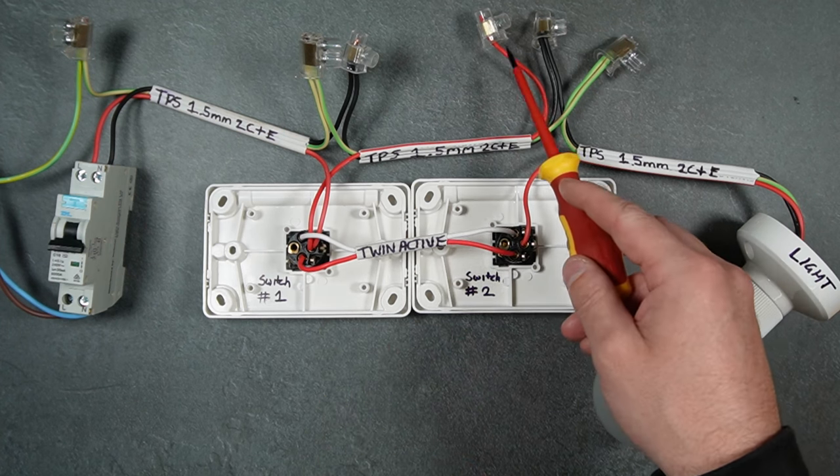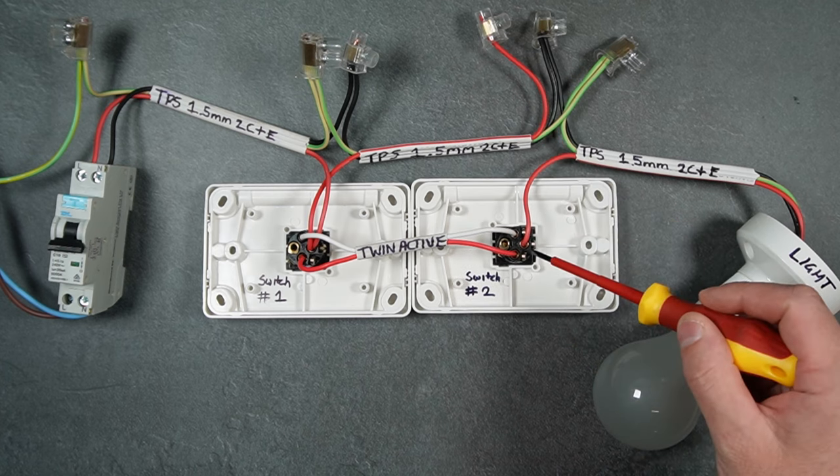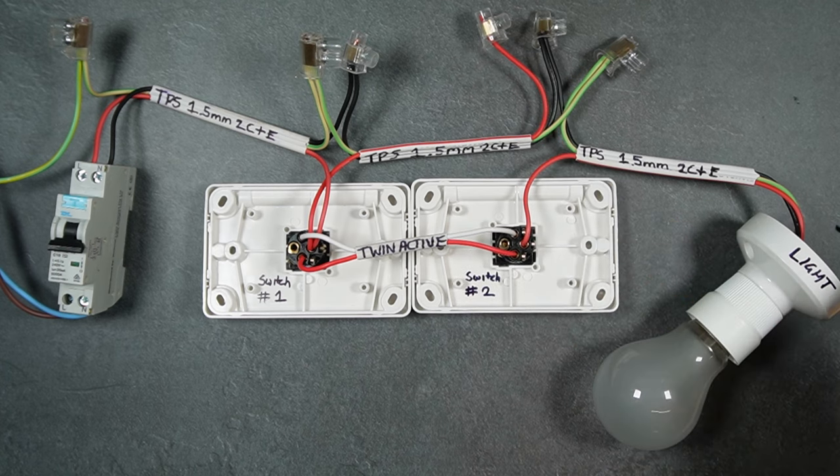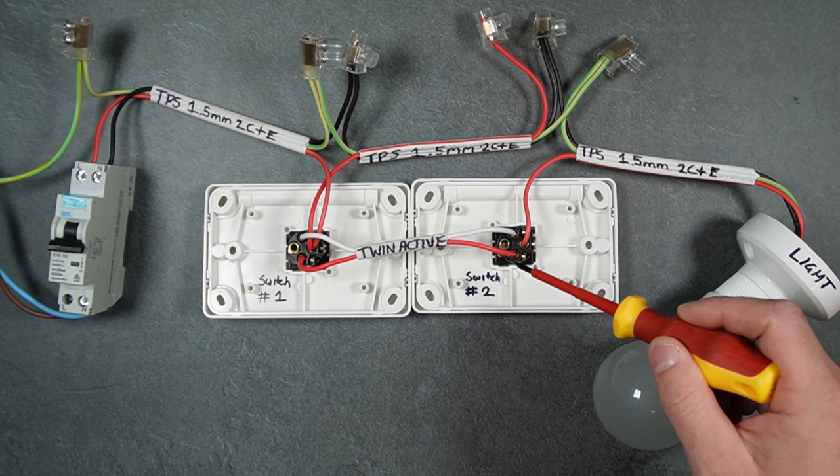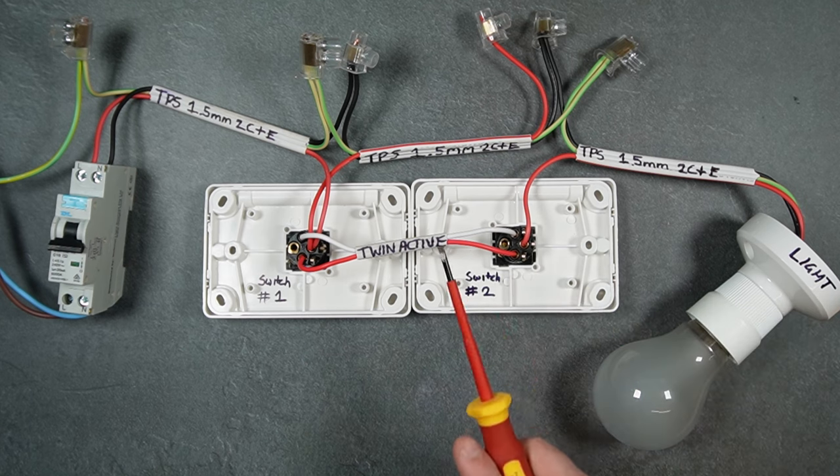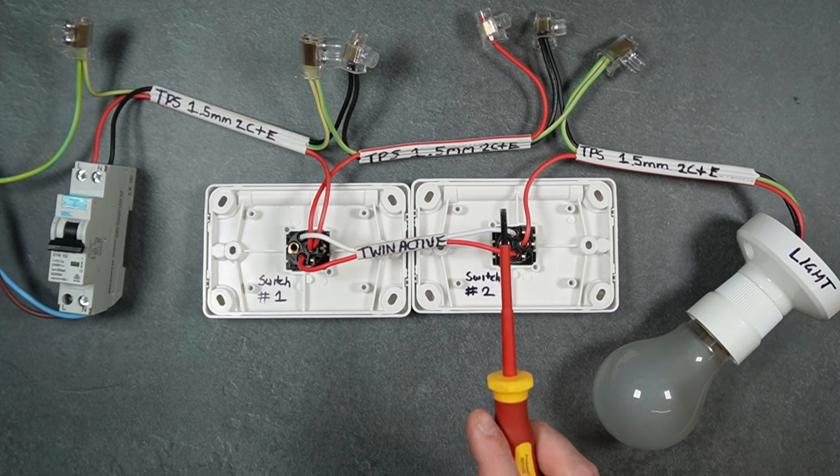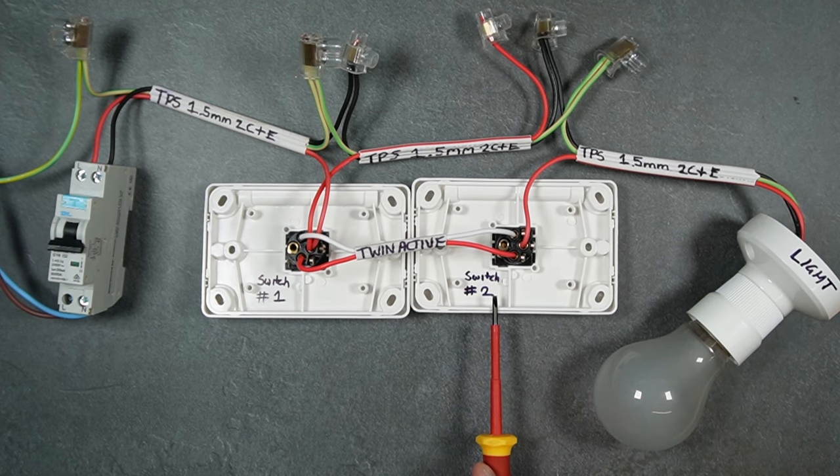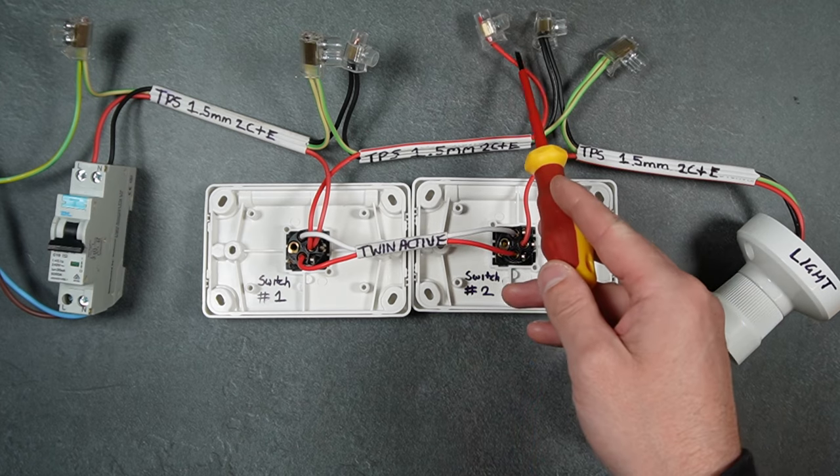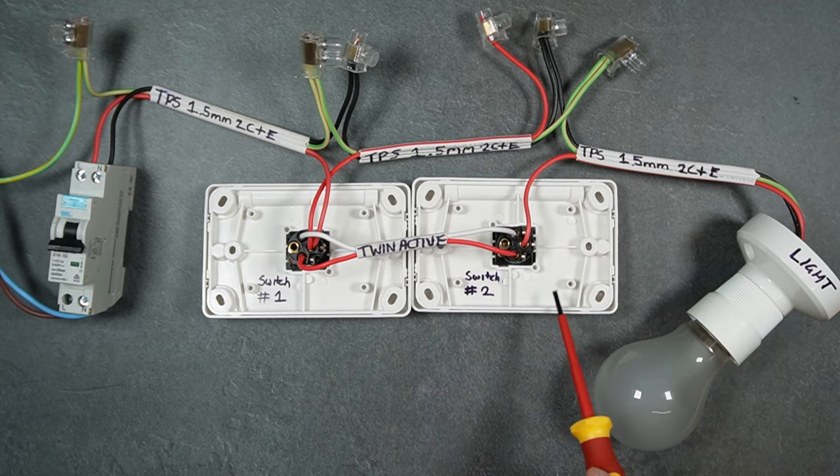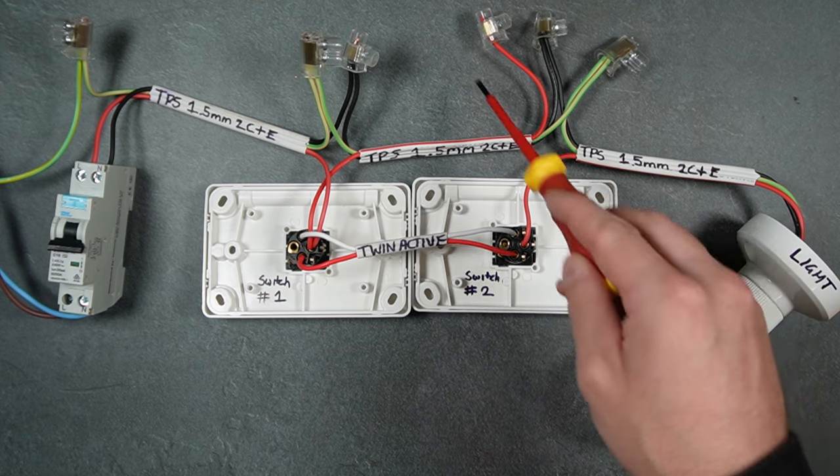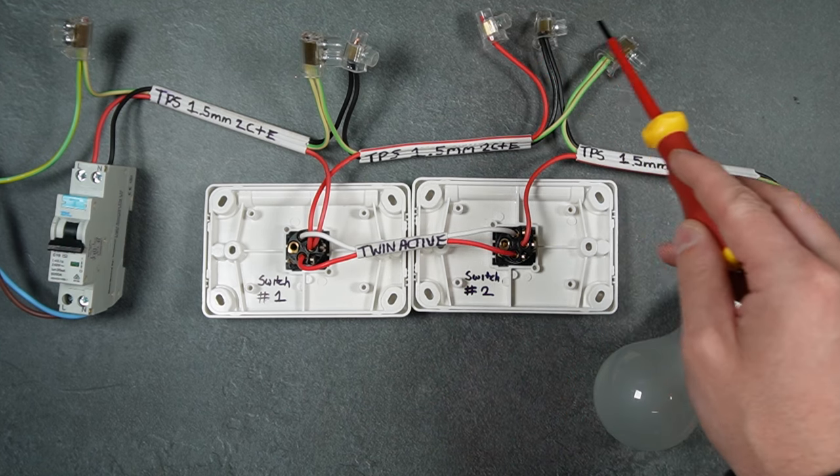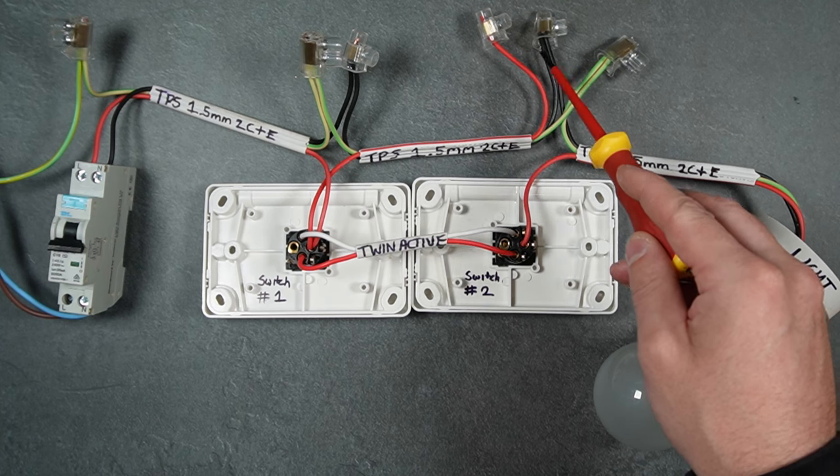Going back to this hard active - it does not go into the common because that's where the active from the white goes. If this is the end of the circuit, which means there are no other switches after switch number two, the hard active will go into a connector. But if there are other switches after switch number two, this active, neutral, and earth will join with another two-core and earth cable and go to the next part of the circuit to another switch.